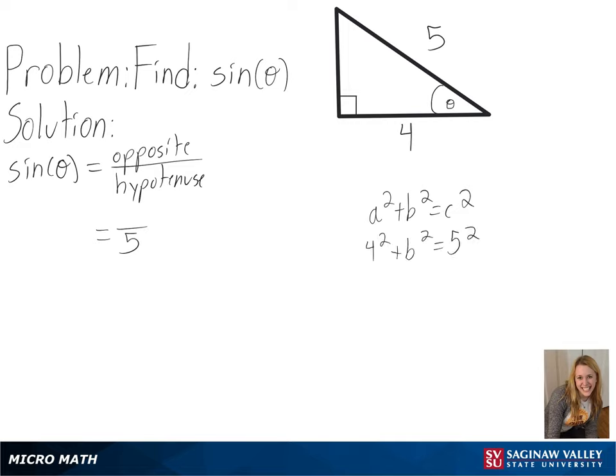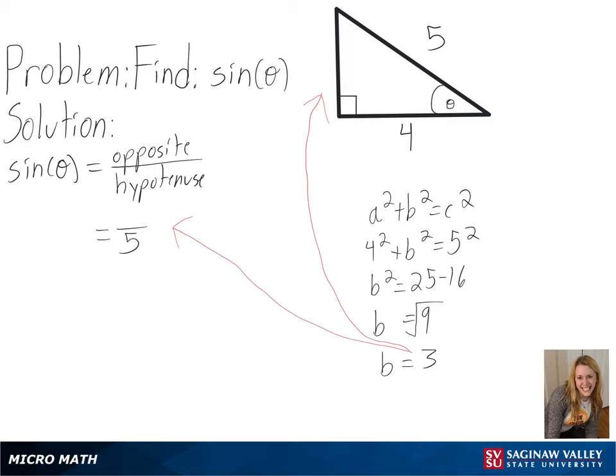Plugging in 4 for a and 5 for c, we get the square root of 9 for b, or 3 for our side length. So we will get 3 fifths as our final answer.